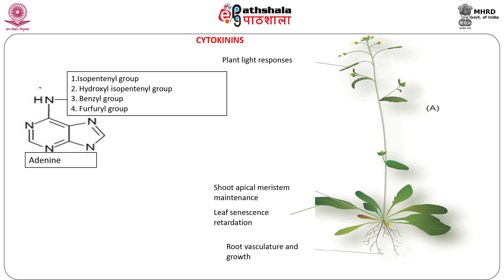Cytokinins are plant growth regulators that consist of adenine substituted at the N6 position with an isopentyl group, hydroxylated isopentyl group, or a benzyl ring. The first cytokinin discovered had a furfuryl purine substitution and was called kinetin because of its ability to induce cell division.